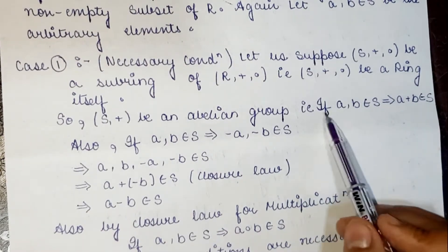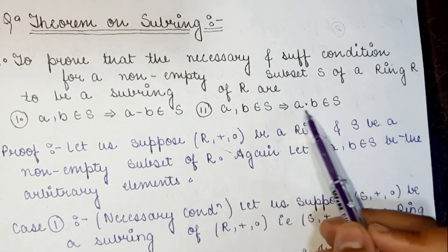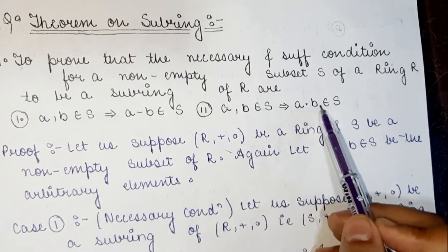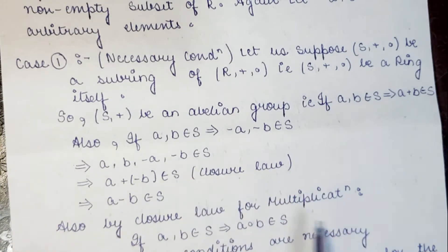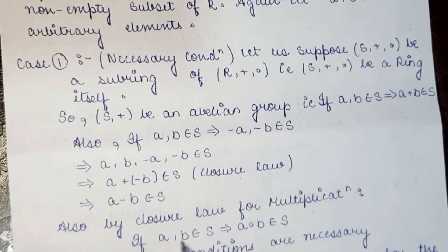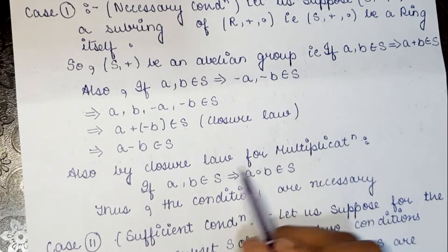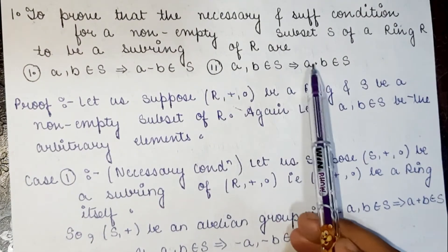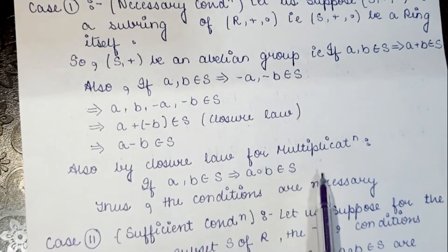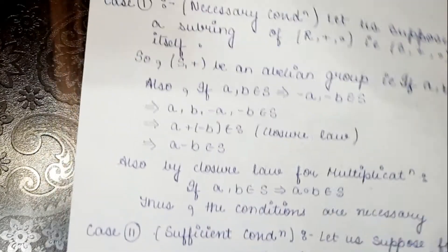So A minus B belongs to S — the first condition is proved. Next, since S is a subring, by closure law of multiplication, if A and B belong to S, then A dot B also belongs to S. Therefore both conditions are proved, and the necessary conditions are satisfied.